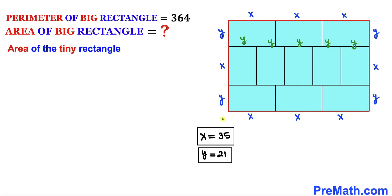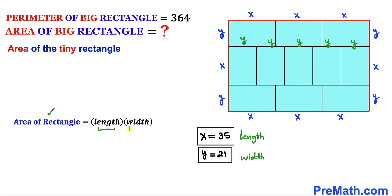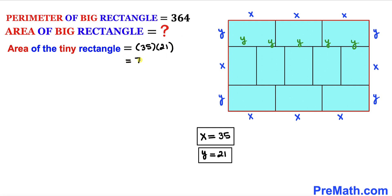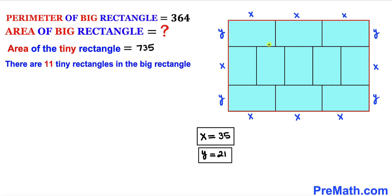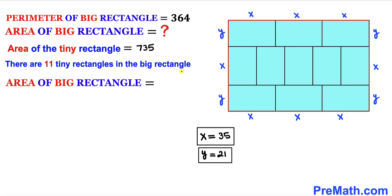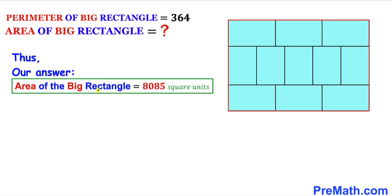Let's calculate the area of this big rectangle. Recalling that area = length × width, the area of one tiny rectangle is 35 × 21 = 735 square units. Since there are 11 identical tiny rectangles in the big rectangle, the area of the big rectangle is 735 × 11 = 8085 square units.